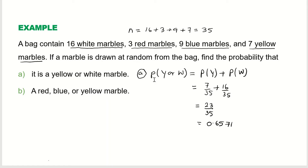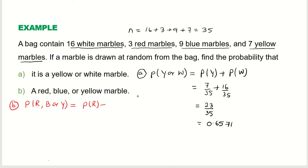So that is the probability that a randomly chosen marble is yellow or white. Now in part B, we want to find the probability that it is red, blue, or yellow. This extends the case to three different marble colors. These events are also disjoint.